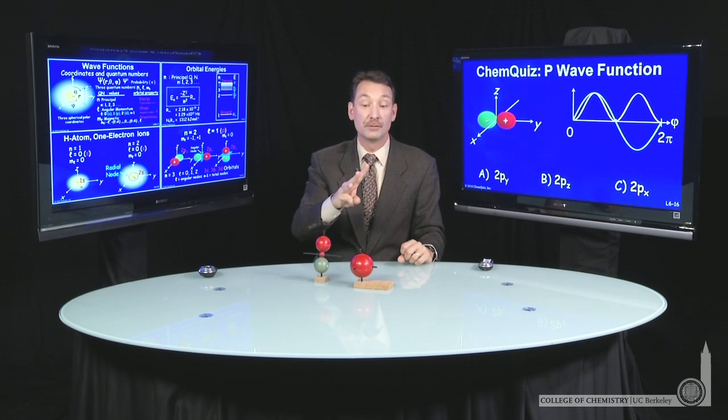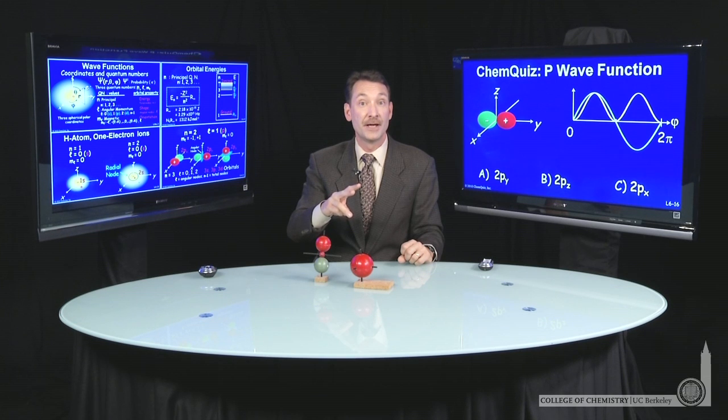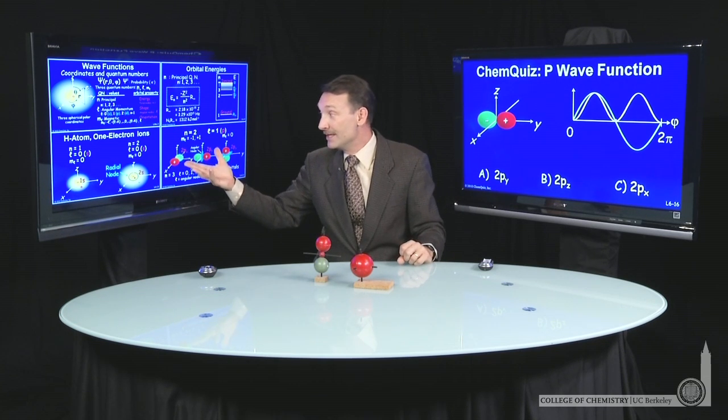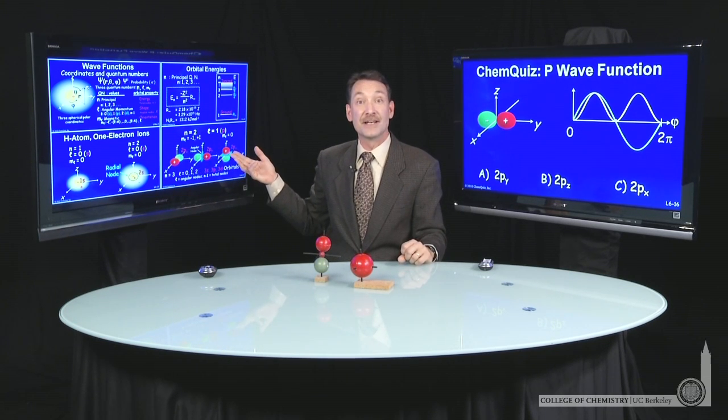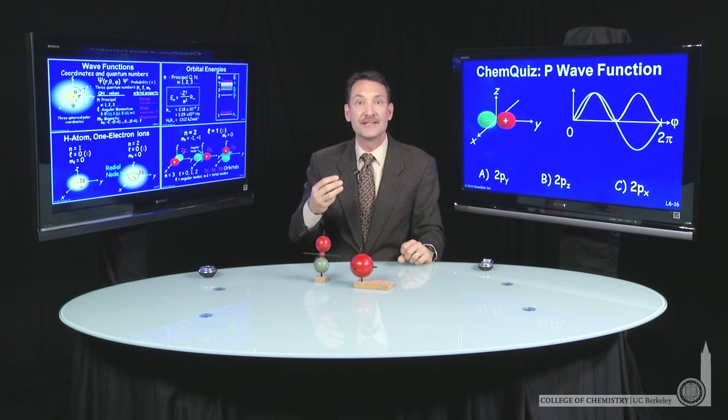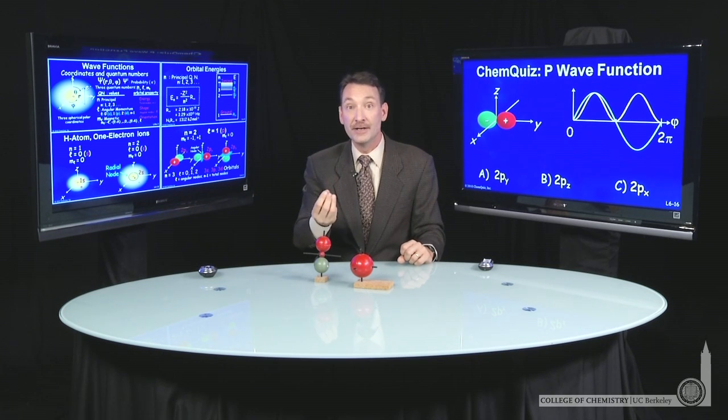m sub l equal minus 1, m sub l equal 0, m sub l equal plus 1. Now, we recombine them into this x, y, and z designation, but the crucial thing is that for l equal 1, there's three values of m sub l.